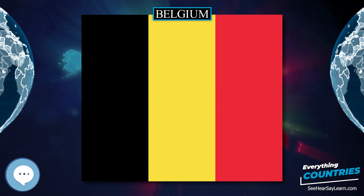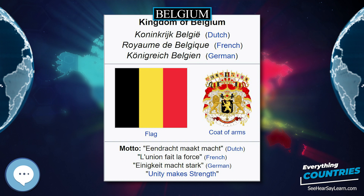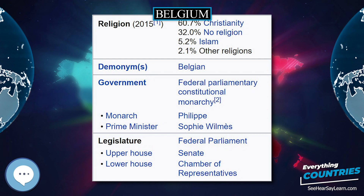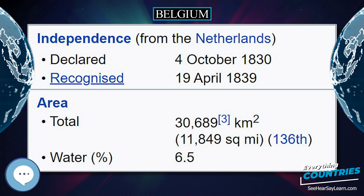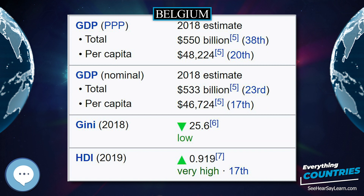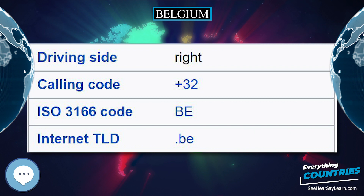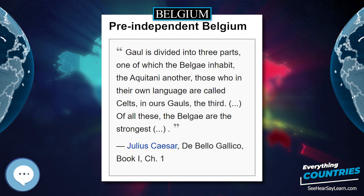Regions also oversee credit and foreign trade and supervise the provinces, municipalities, and intercommunal utility companies. In education, the autonomy of the communities neither includes decisions about the compulsory aspect nor allows for setting minimum requirements for awarding qualifications, which remain federal matters. Each level of government can be involved in scientific research and international relations associated with its powers. The treaty-making power of the regions and community governments is the broadest of all federating units of all federations in the world.